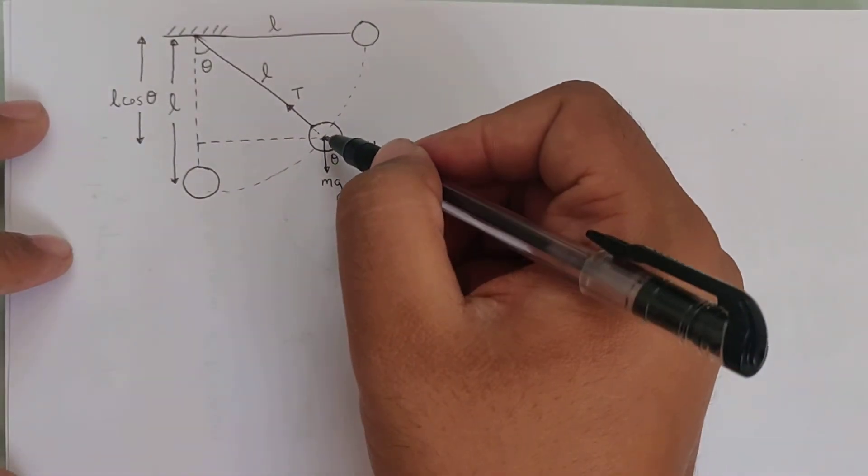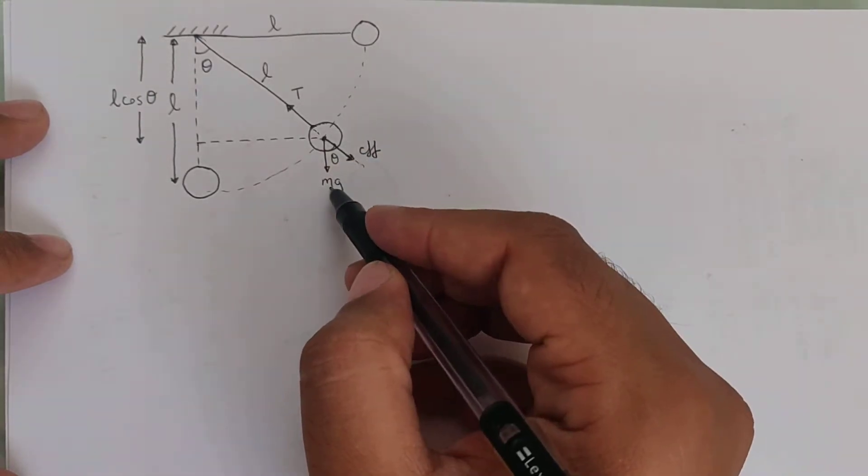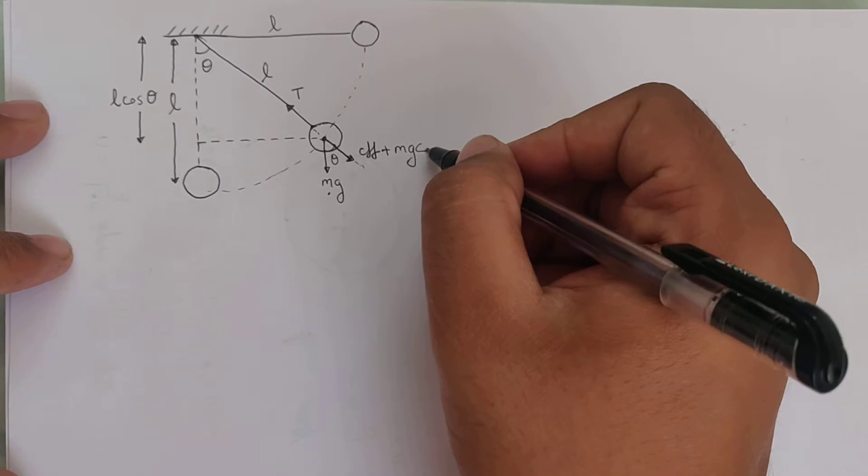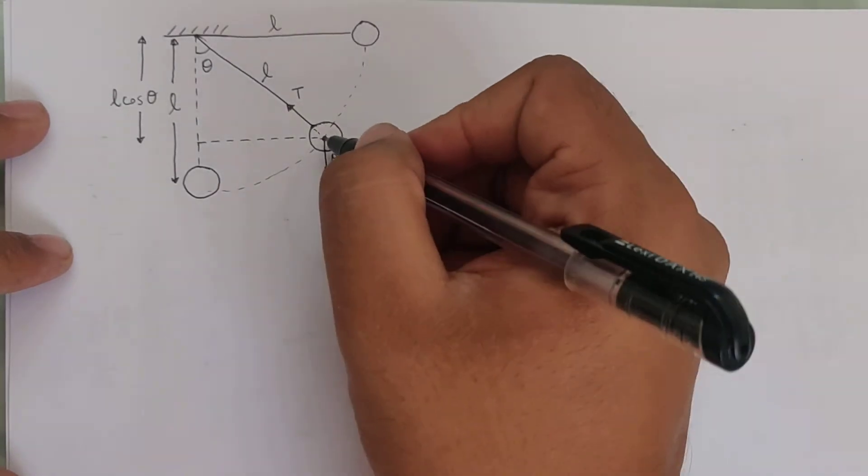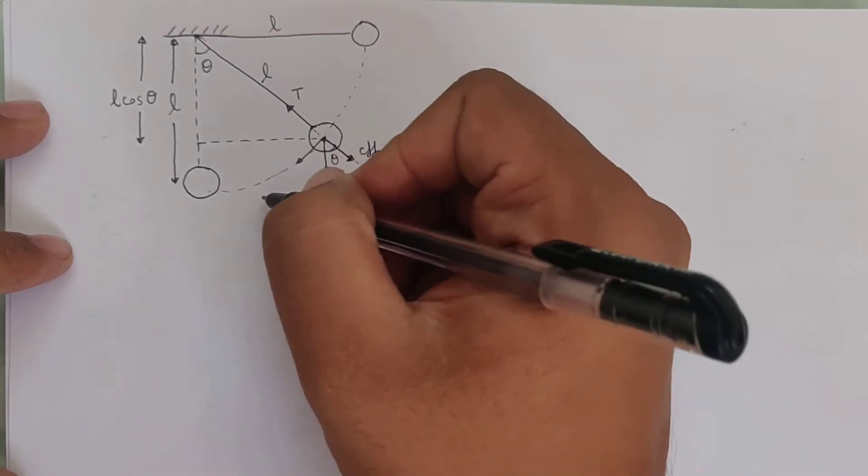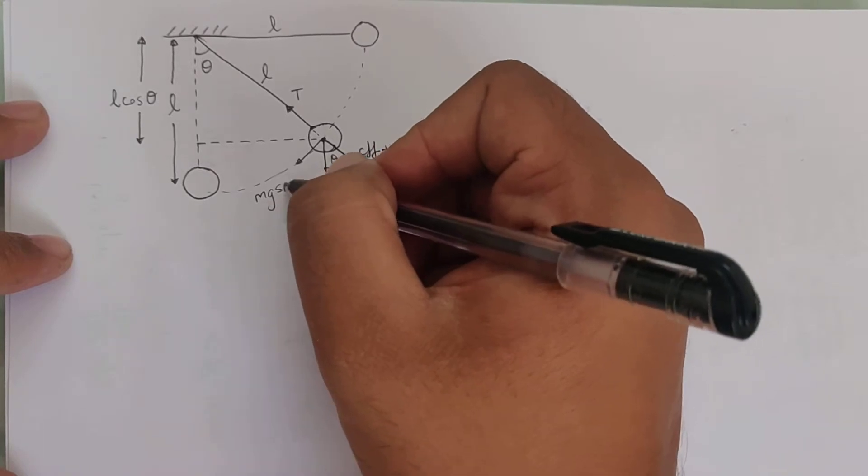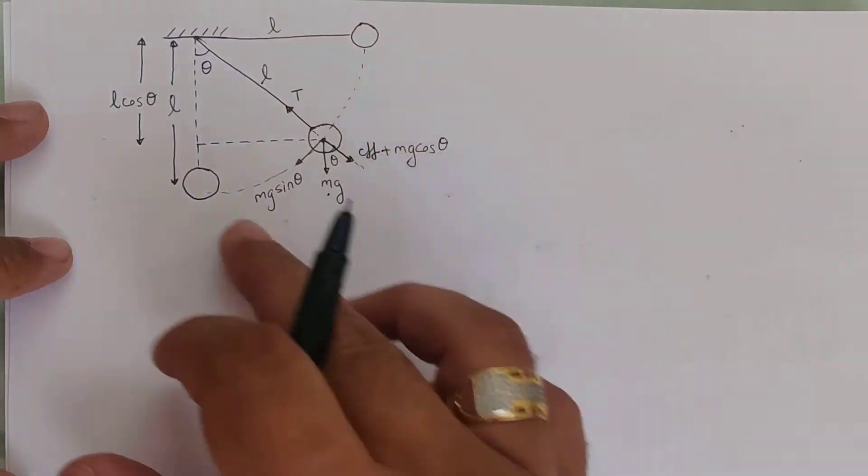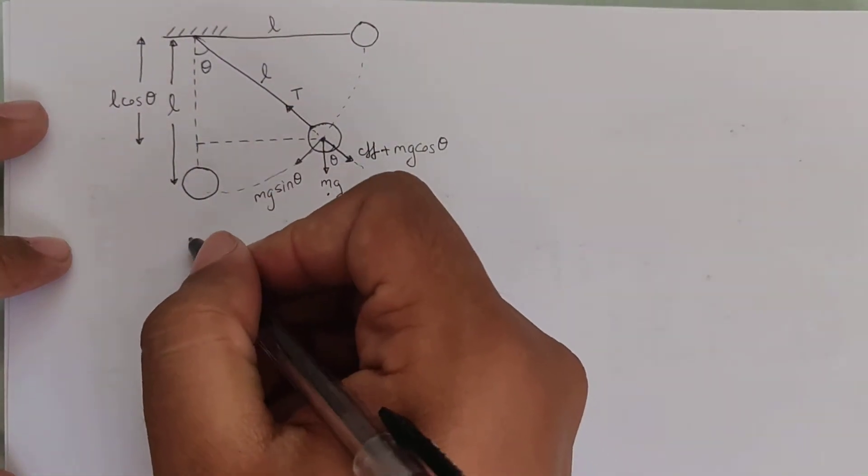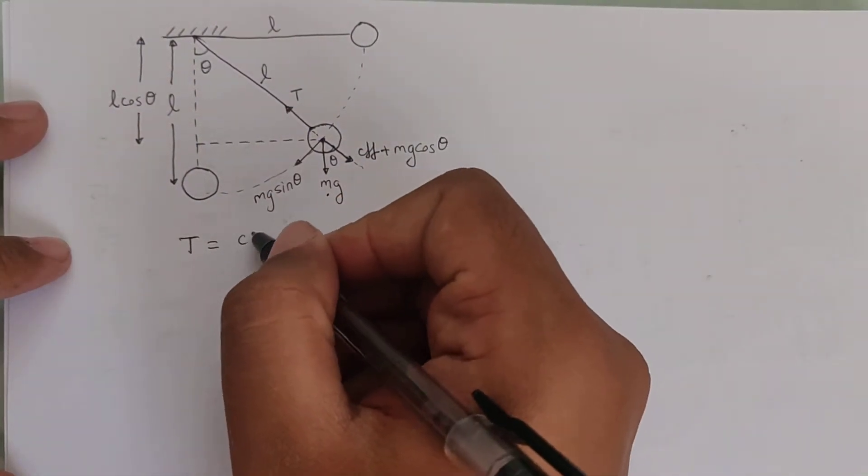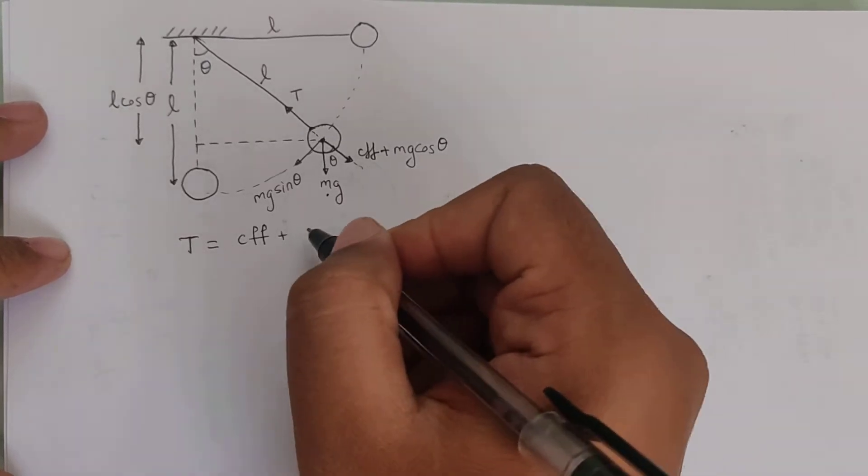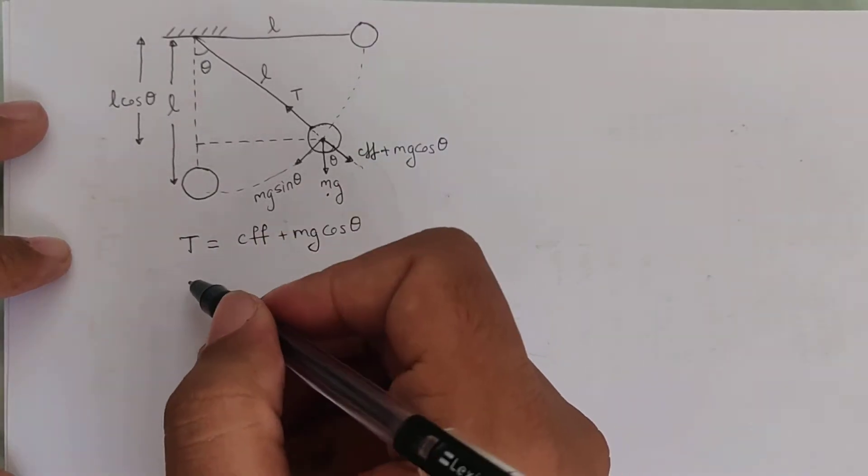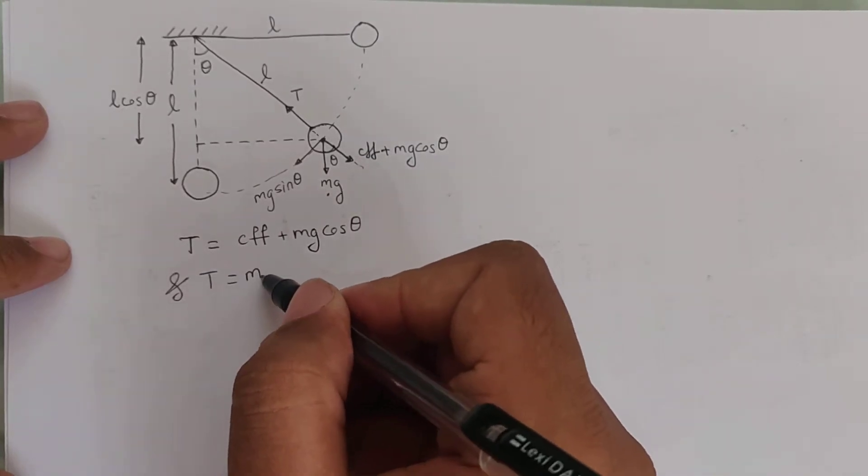If I resolve the Mg, I get centrifugal force plus Mg cos theta in the same direction and Mg sin theta as the tangential force. From the diagram I can say the tension is balancing the centrifugal force plus Mg cos theta. From the question they say tension is Mg.